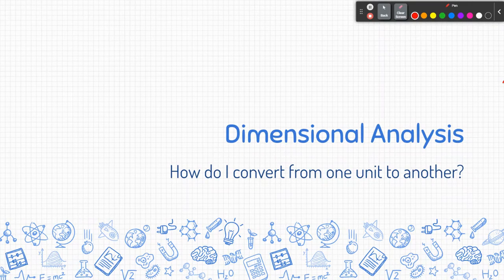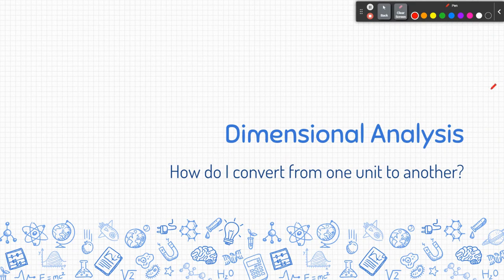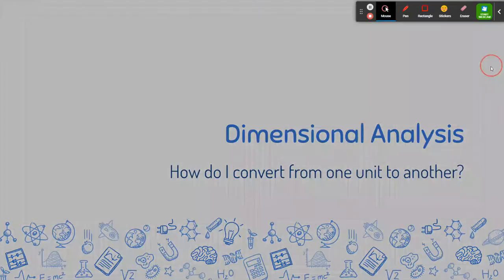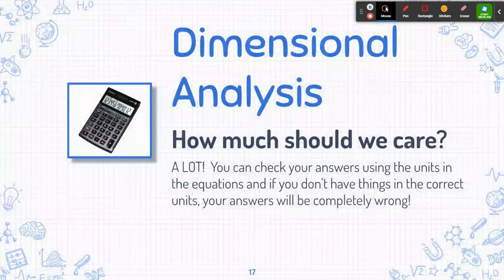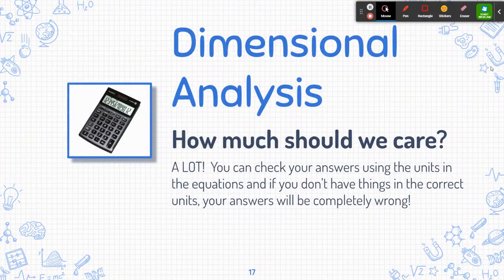Next we need to talk about dimensional analysis. This is something that is done a lot in chemistry and it's important in physics, but we're not going to spend tons and tons of time on it. It is important because if you do not have the right units for a number when you put it into an equation, you will get the wrong answer.